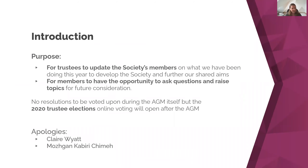Often in an AGM there would be voting and resolutions. The main vote needed is to elect new trustees, but because we do that by electronic voting, it's not actually happening during the AGM. We will launch the elections and voting will happen in the three weeks following the AGM. Whilst we don't have any resolutions to be voted on today, there are lots of opportunities to help shape the society.